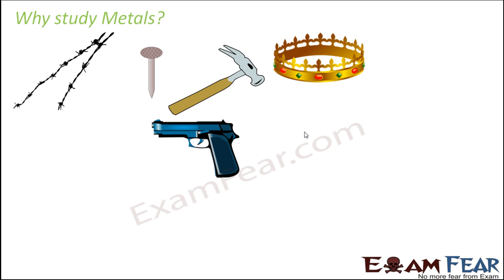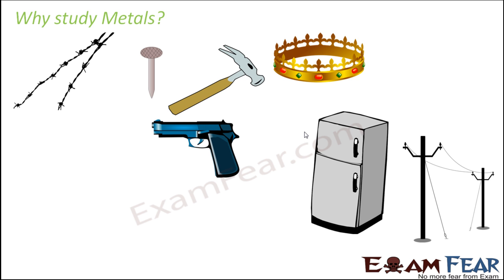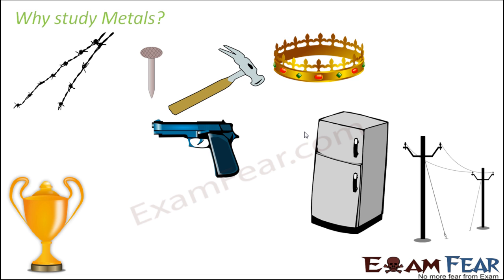Not only that, the guns used by police officers for our protection are made up of metal. A lot of things like refrigerators, bicycles, bikes, cars — their body parts are also made up of metals. The wires which conduct electricity, bringing power to our homes from the main source, are made up of metals, because metals are extremely good conductors of electricity. The trophy which you win is also made up of metal — gold medal, silver medal, and so on.